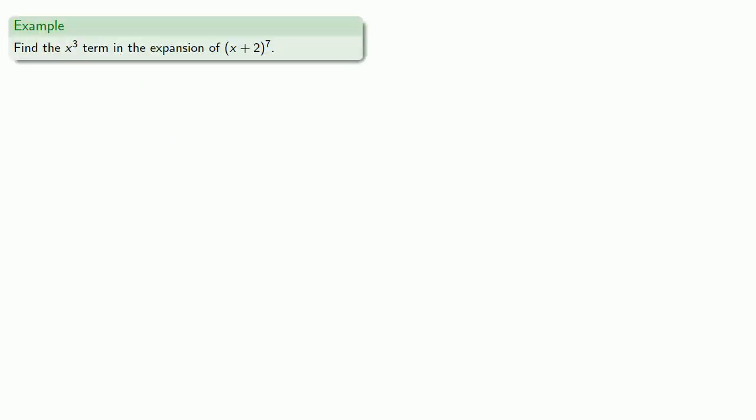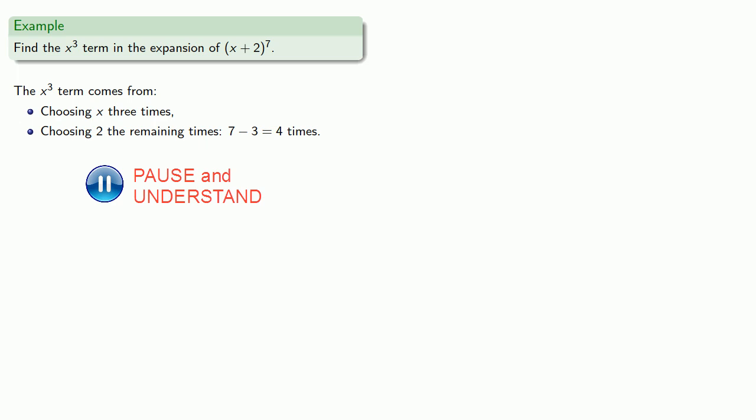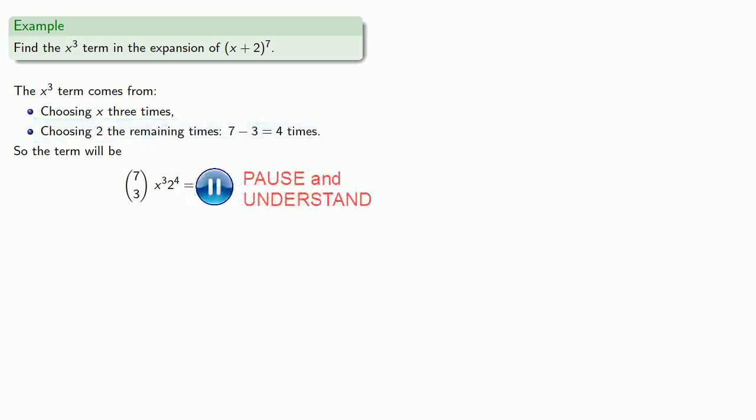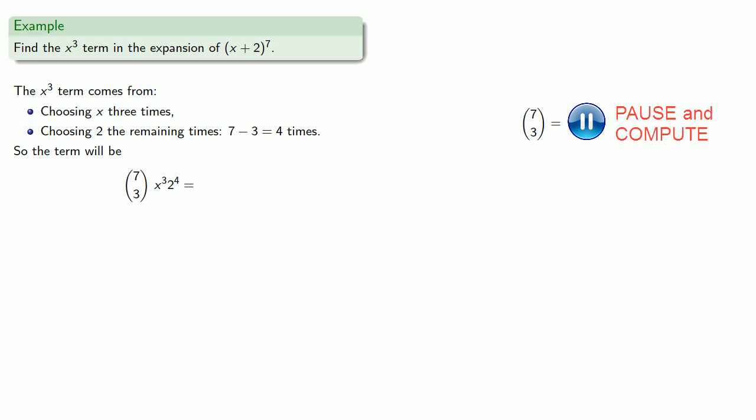For example, let's say we want to find the x³ term in the expansion of (x + 2)⁷. We have seven factors we have to choose. The x³ term has to come from choosing x three times and choosing 2 the remaining 7 - 3 = 4 times. So the binomial coefficient will be (7 choose 3). Since we've chosen x three times, we have x³. And since we chose 2 four times, there's going to be 2⁴. We find (7 choose 3) = 35, and so the term itself will be 35 × 16 × x³ = 560x³.